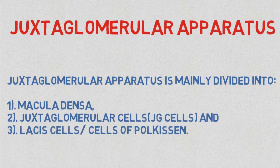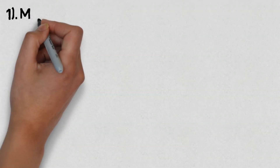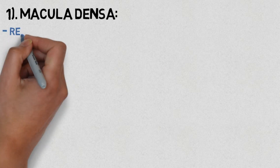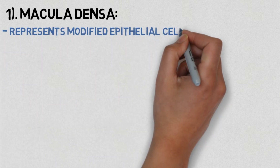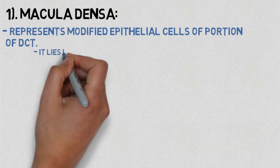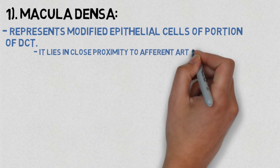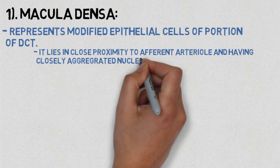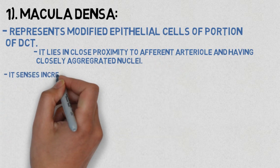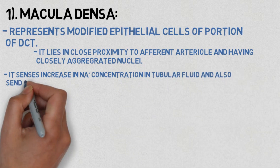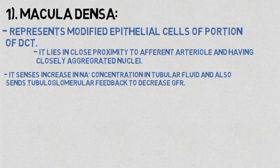Number one: macula densa. Macula densa represents modified epithelial cells of the portion of the distal convoluted tubule which lies in close proximity to the afferent arteriole, having closely aggregated nuclei. It also senses an increase in sodium concentration in the tubular fluid and sends tubuloglomerular feedback to decrease the glomerular filtration rate.